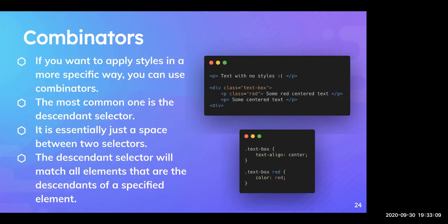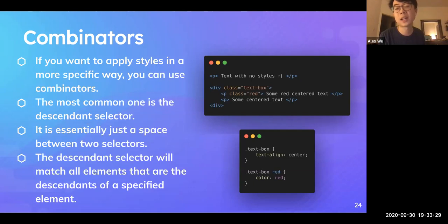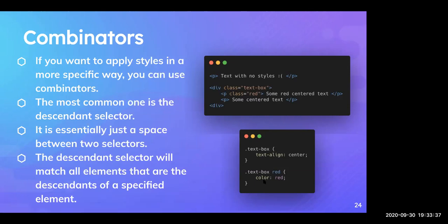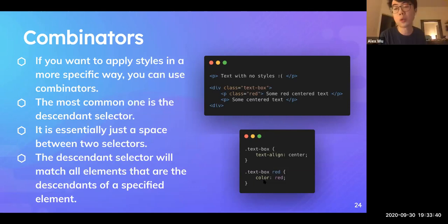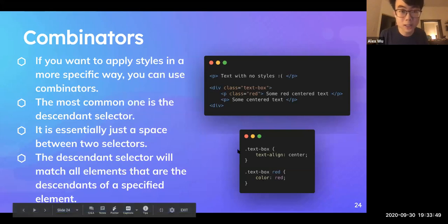Another question about inheritance: if text-box had color blue, would the text inside the red class still be red, but the rest would be blue? Yes, exactly. You inherit all attributes from the parent if nothing specific is defined for the child. Great questions.